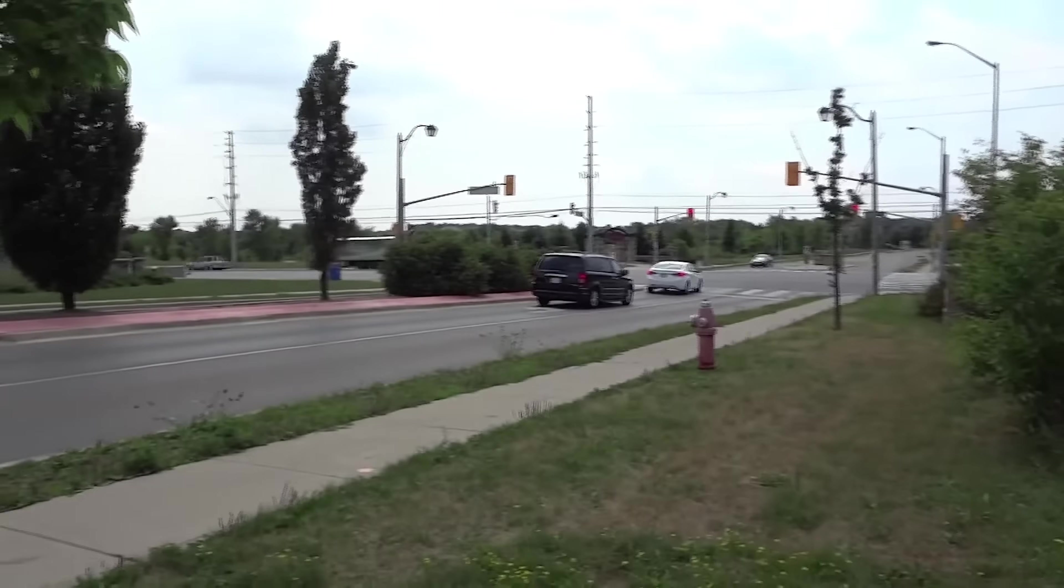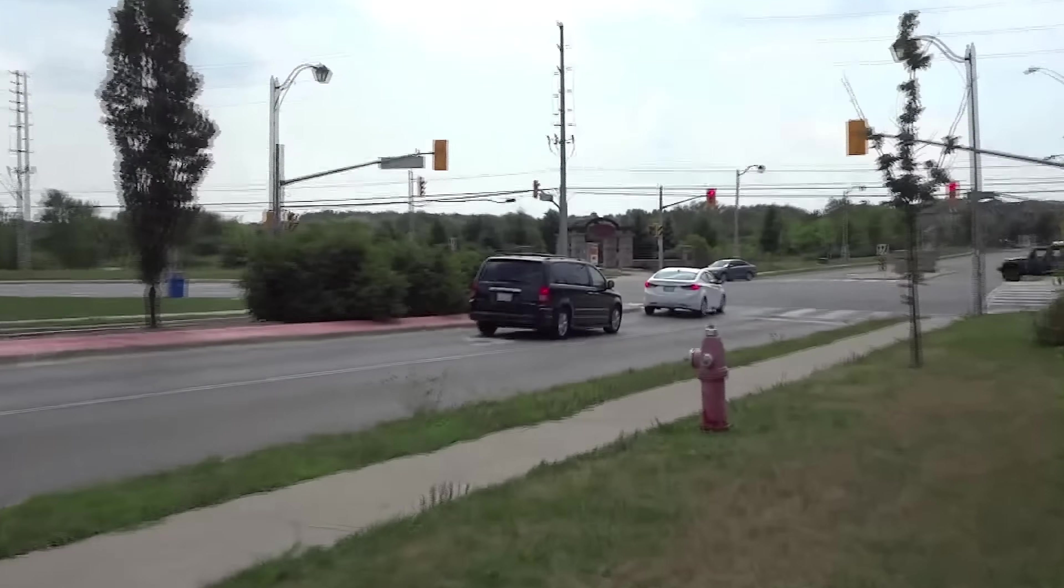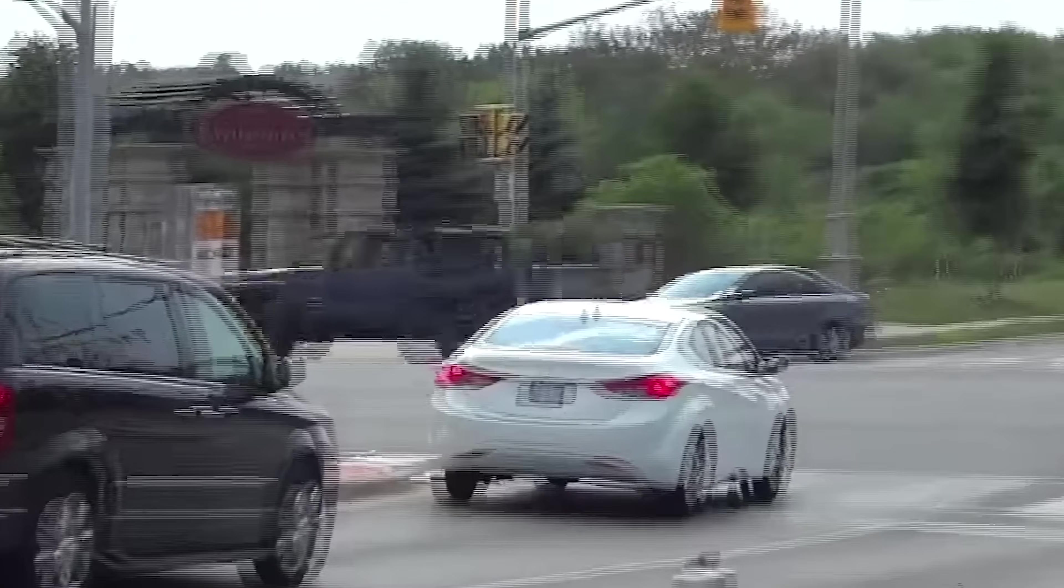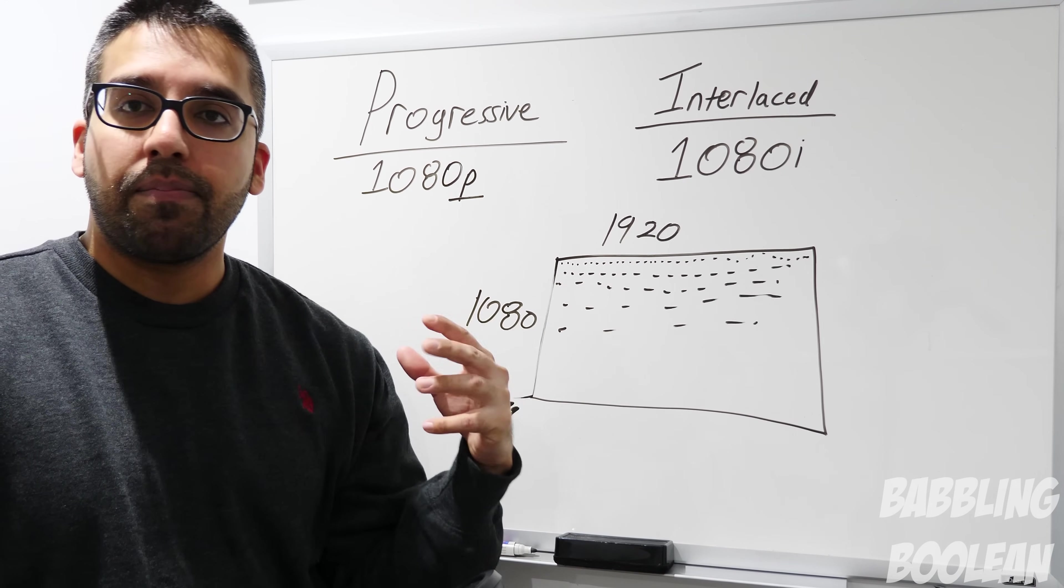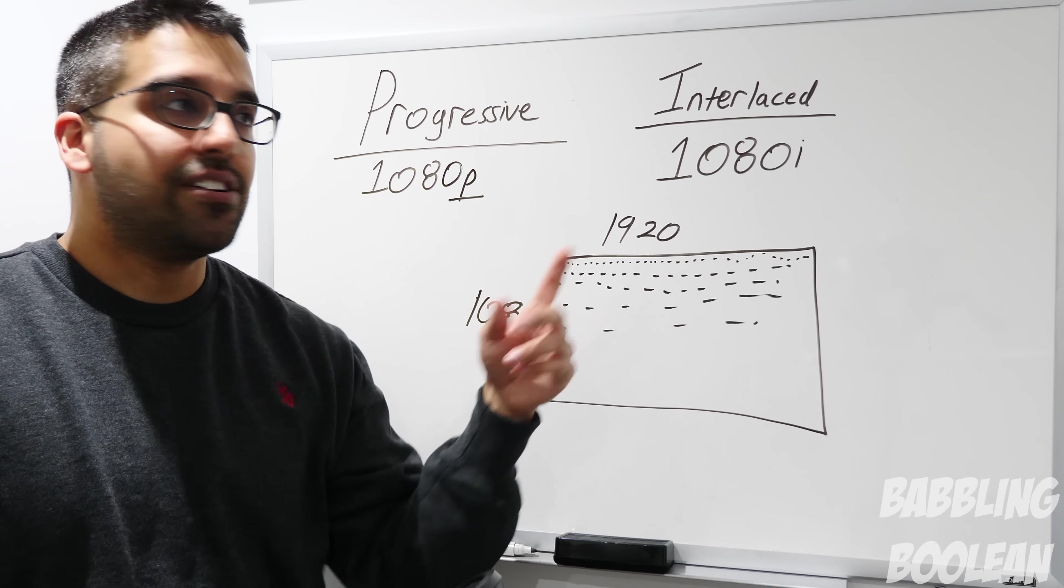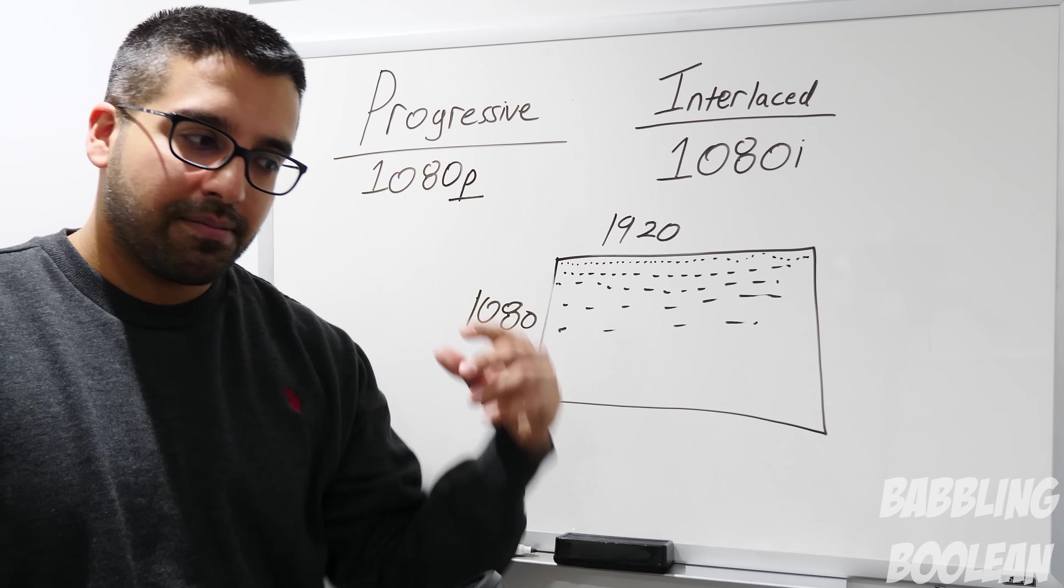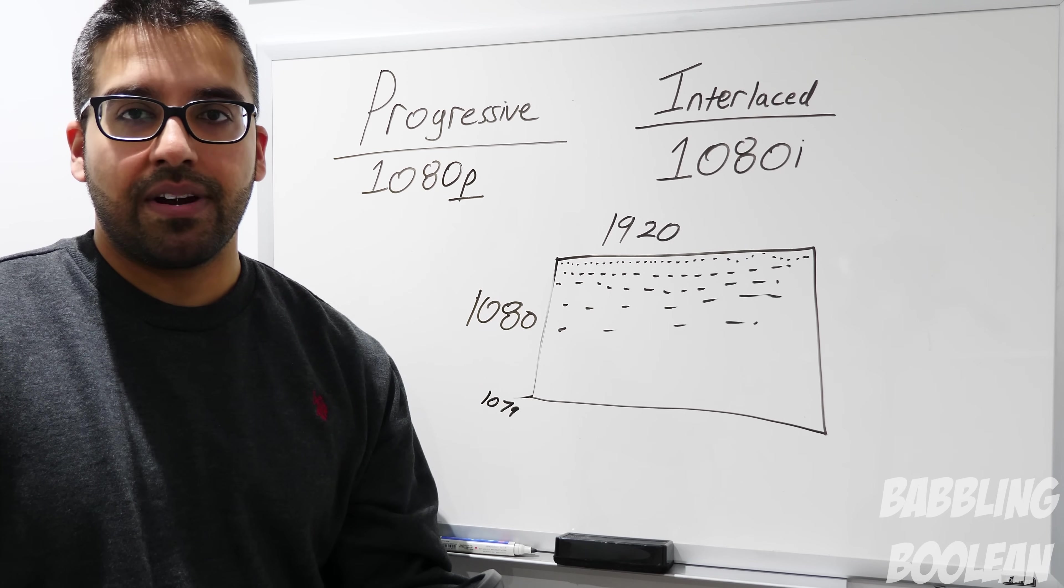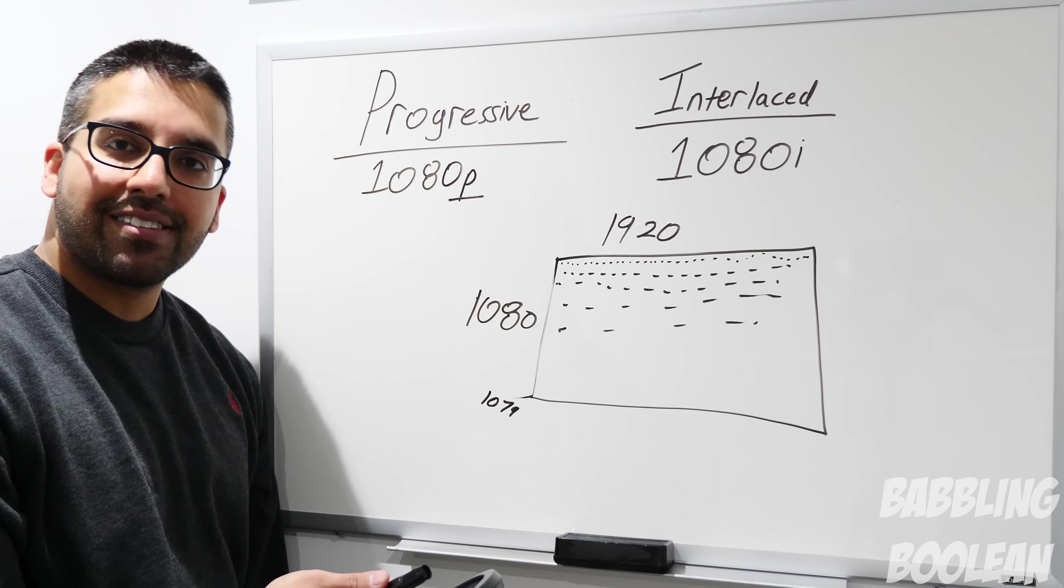You might have seen situations where you have an interlaced video playing and the object is moving very fast and you see these jagged lines in the corners. That's because TVs are primarily designed for progressive technology, but the source of the video might be interlaced. So TVs use this technology called de-interlacing to make it look like progressive. Sometimes it works well, sometimes it doesn't, and you might see those jagged lines still.